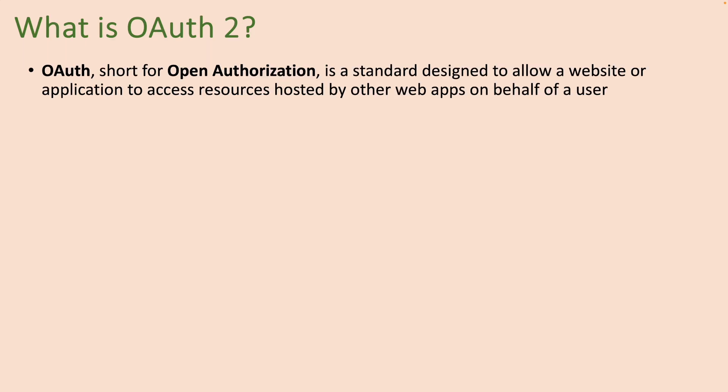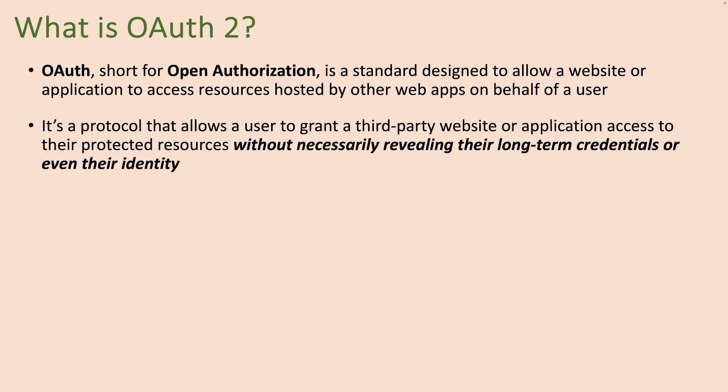Firstly, let's understand what OAuth 2 is about. OAuth, short for open authorization, is the standard designed to allow a website or application to access resources hosted by other web applications on behalf of a user. It's the protocol that allows the user to grant a third-party website or application access to their protected resources without necessarily revealing their long-term credentials or even their identity.